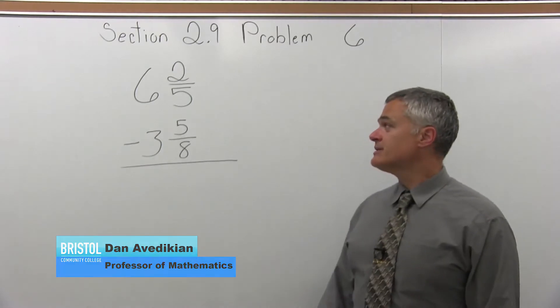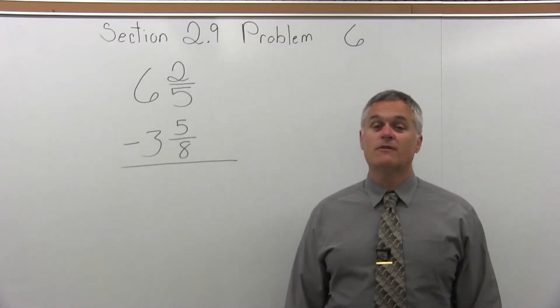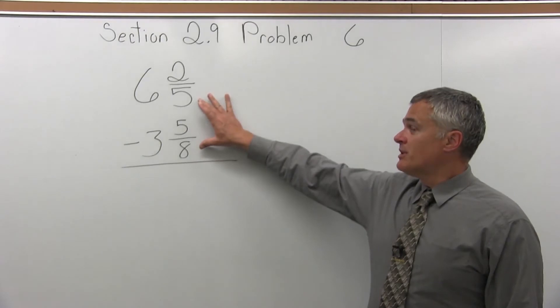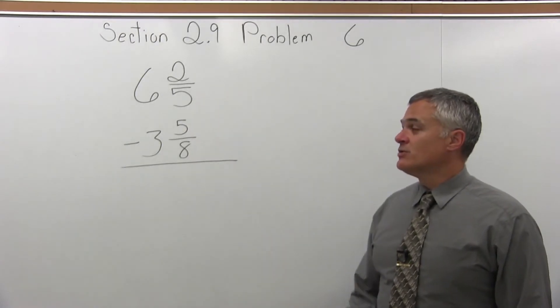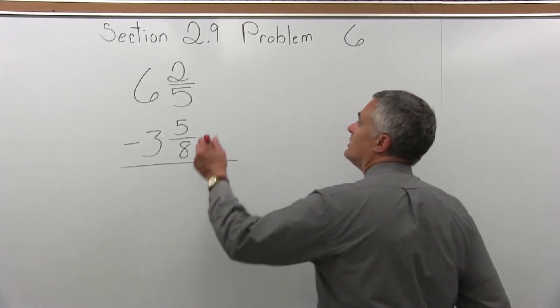It says 6 and 2 fifths minus 3 and 5 eighths. So we have to find the common denominator. One denominator is 5 and the other is 8, so a good common denominator would be 40.